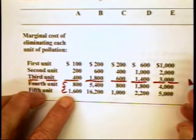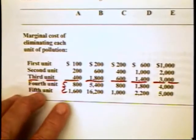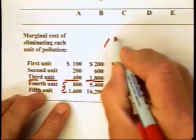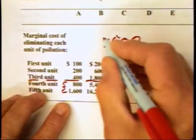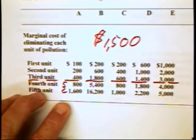If in fact these firms can sell their rights to pollute, what's going to happen? Well, we know again that the quantity demanded is equal to the quantity supplied at $1,500.